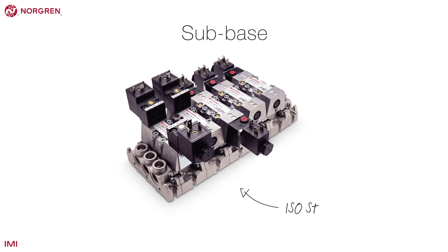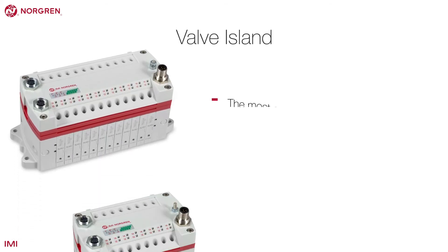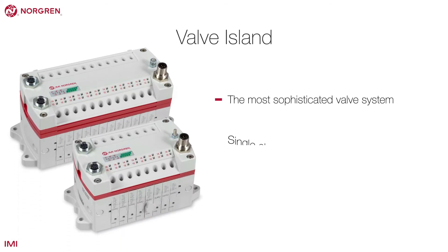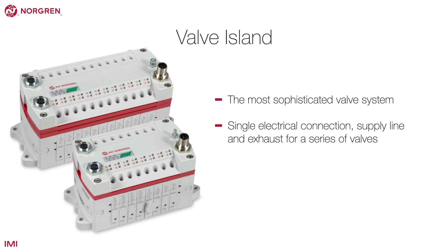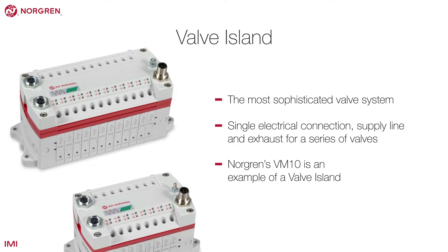Norgren's ISO-Star range is an example of a sub-base valve. A valve island is the most sophisticated valve system, allowing for just a single electrical connection, supply line and exhaust for a series of valves. Norgren's VM10 is an example of a valve island.